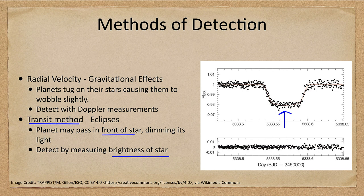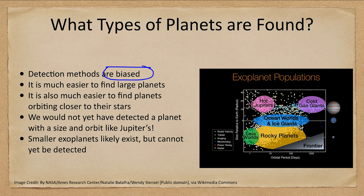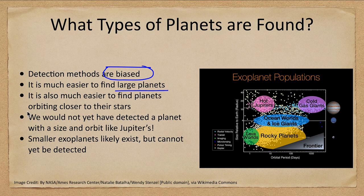Now what have we discovered? We found lots of exoplanets, but one of the problems is that the detection methods are biased. That's not a bad thing, it's just what they're set up to detect. It is very easy to find large planets, easier to find a large planet than a small planet. It's also easier to find planets orbiting close to their star.